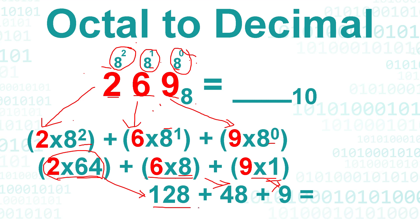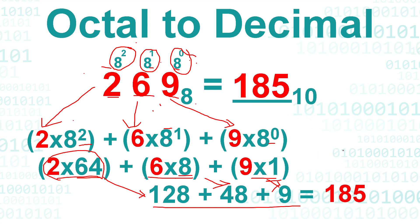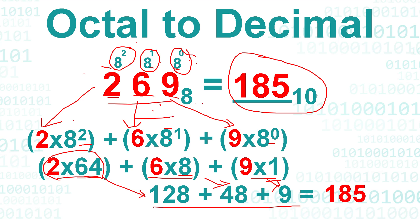So we get the sum of these three numbers and we have 185. So 185 is our answer in decimal — converting 269 octal to decimal.